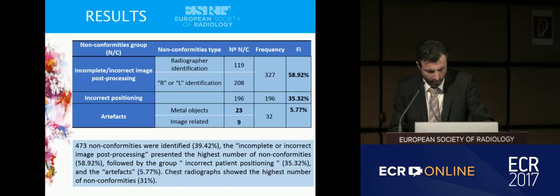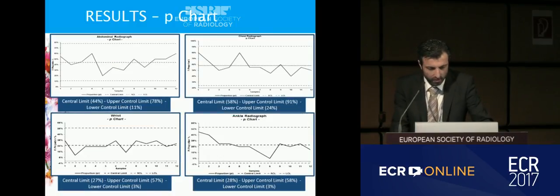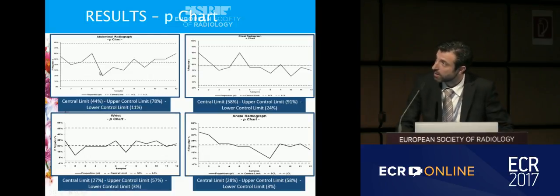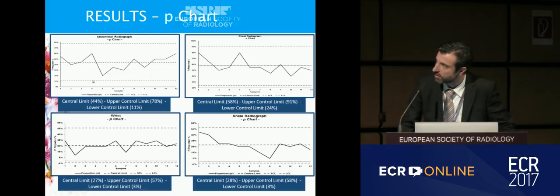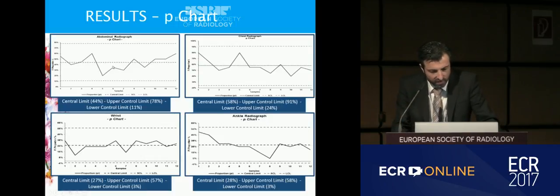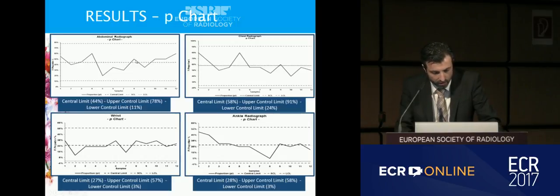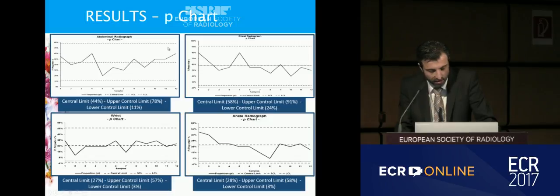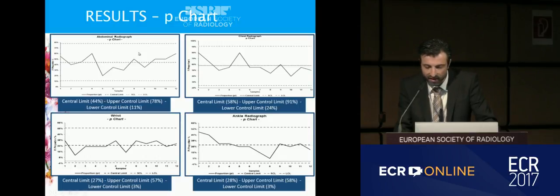We can see here in the P charts our limits: the upper limit and the lower limit. The central limit is about 44%, the upper limit is 78%, and the lower control limit is 11%. This is for the abdominal radiograph.